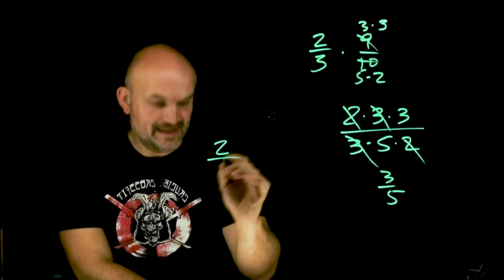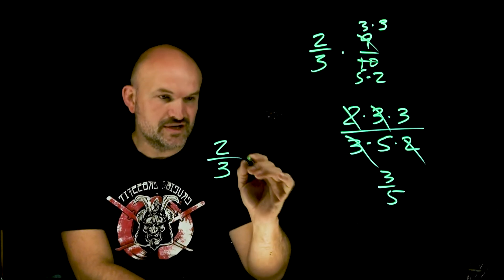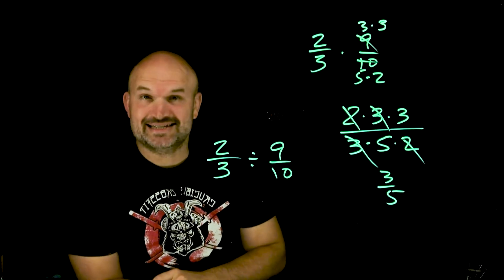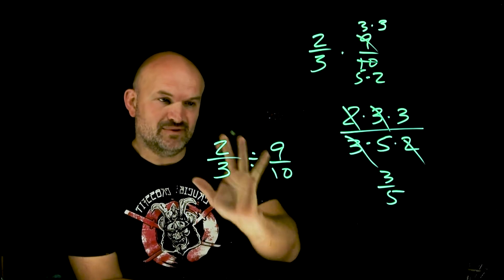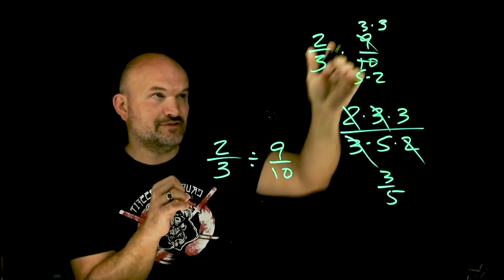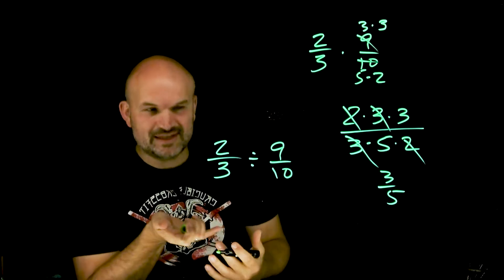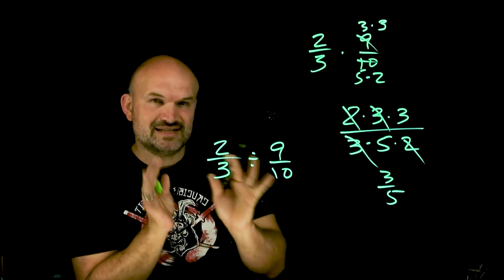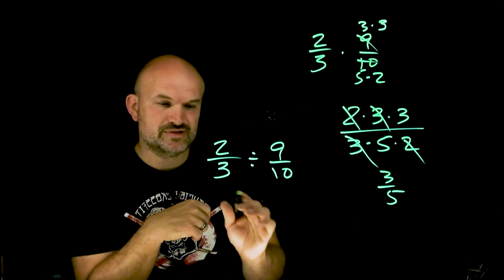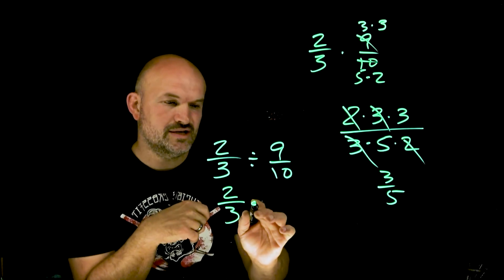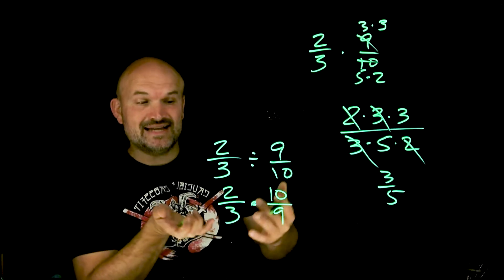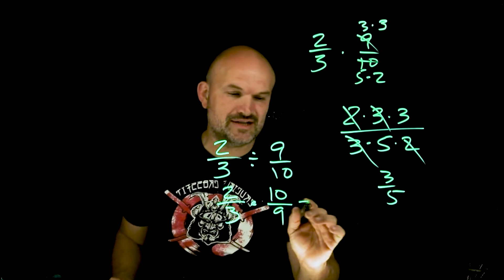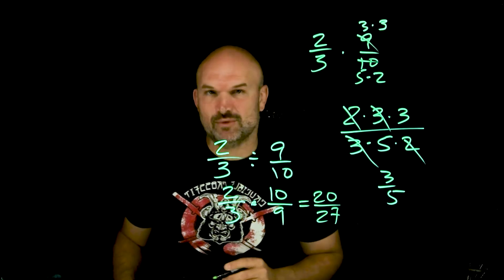The next thing to remember is dividing fractions. We have two-thirds divided by nine-tenths. In this case we can't simplify first because dividing works a little differently than multiplication. However, remember: dividing by a fraction is the same operation as multiplying by the reciprocal. So two-thirds divided by nine-tenths becomes two-thirds multiplied by ten over nine. Since nothing simplifies, I multiply straight across — that's 20 over 27.